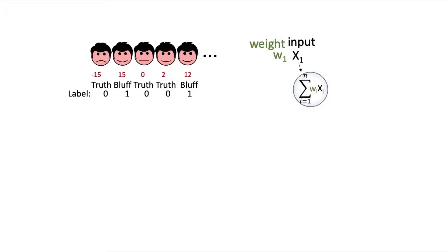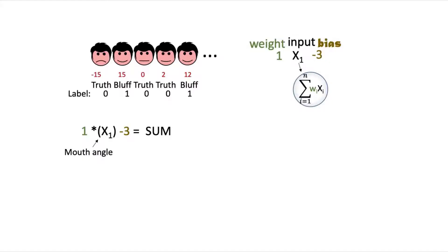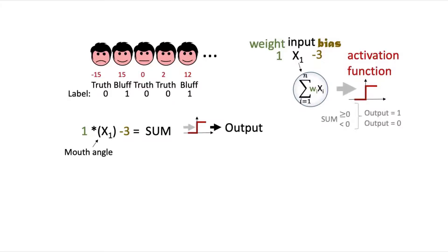The perceptron takes the weighted sum of the inputs. In this case, the weighted sum is just the weight times our one input value, combined with its unique bias term. You use the data you've collected and train the perceptron model to find the values of weight and bias that will most accurately predict your test data. After training, the perceptron found a weight of 1 and a bias of negative 3. The sum is calculated as: 1 times the mouth angle x, minus 3. This value of the sum is then fed through the step activation function to produce an output from the neuron.